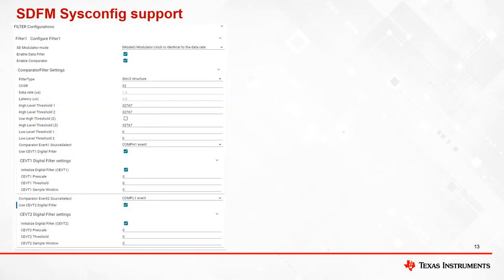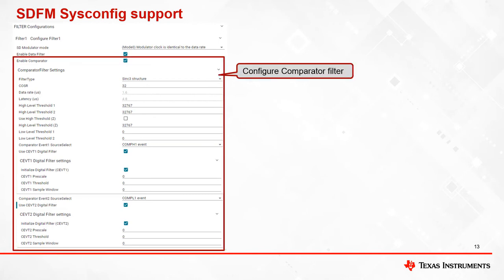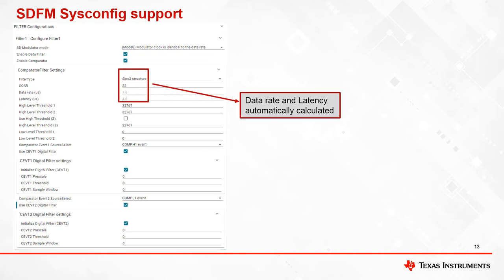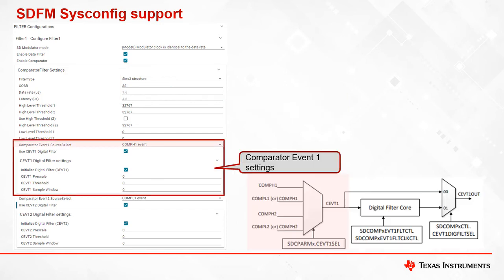Let's look at the configuration options available for the comparator filter within a filter channel. The comparator filter settings drop-down allows you to select its filter type, OSR setting, threshold setting, and comparator event 1 and event 2 settings. Data rate and latency of the comparator filter are automatically calculated for the selected filter type and OSR settings. The source of comparator event 1 can be selected as shown here, and it also allows you to configure digital filter core settings from SysConfig. Similarly, comparator event 2 can be configured.